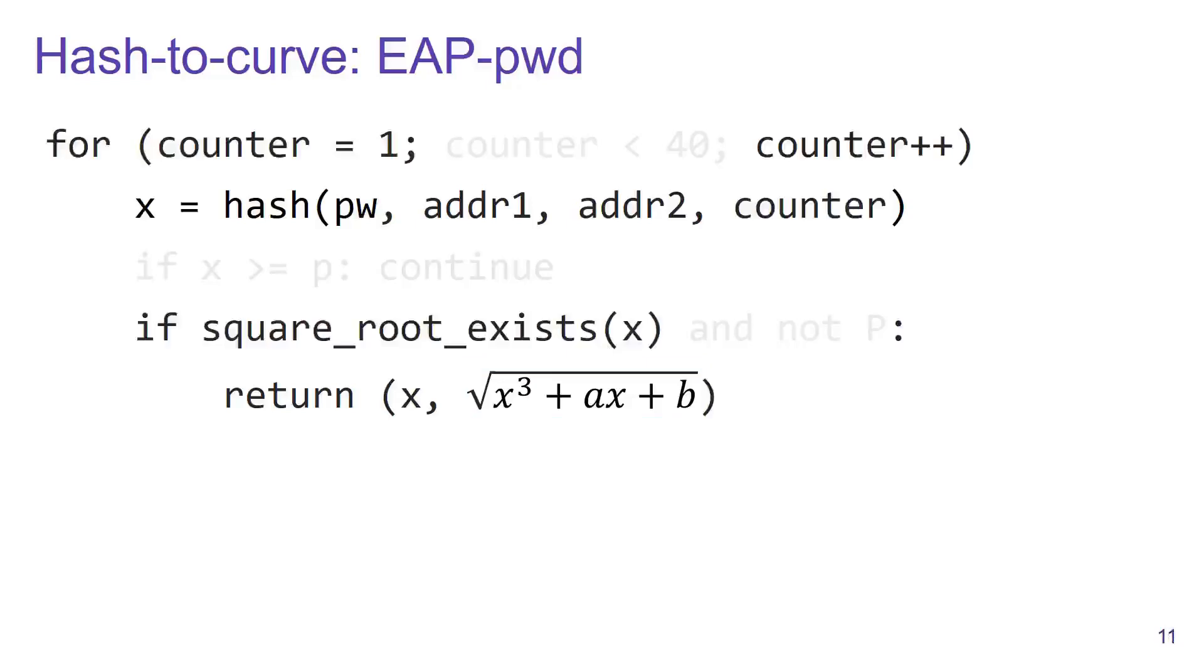What did the designers decide to do? They included a counter in the hash function. In case the x-value does not result in a y-value, we simply execute a new iteration with the counter incremented by one, which results in a new x-value that hopefully does lie on the curve.